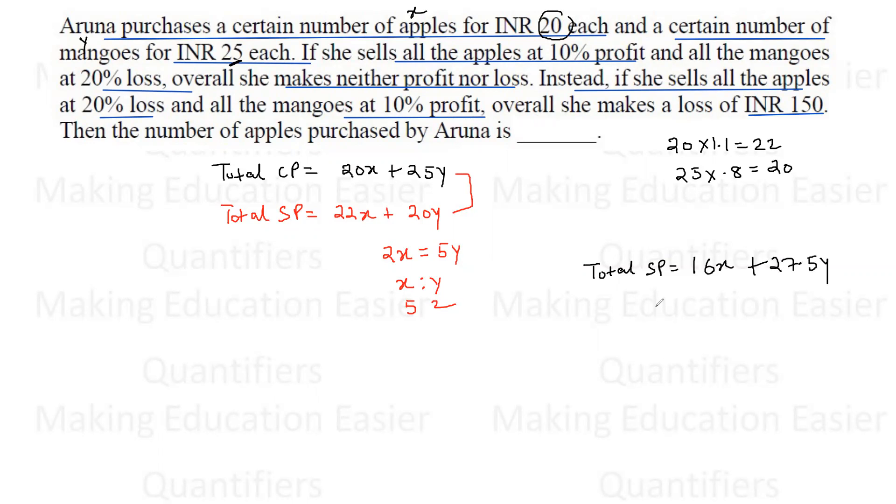This is the total selling price in the second case. Overall there is a loss of 150. Loss means cost price minus selling price equals the loss. So cost price 20X + 25Y minus selling price 16X + 27.5Y equals 150.